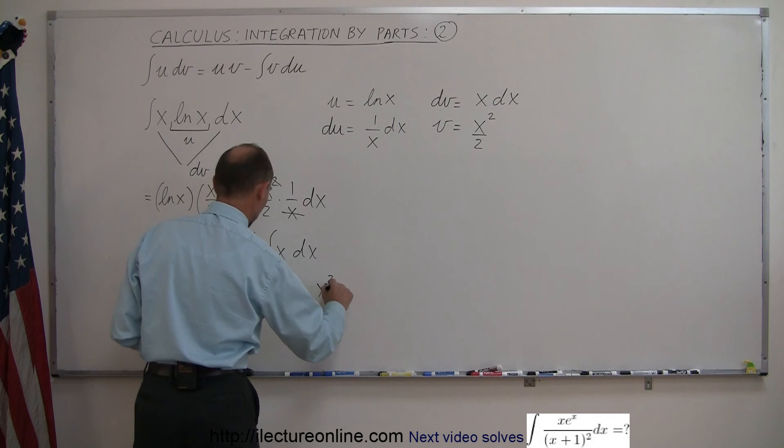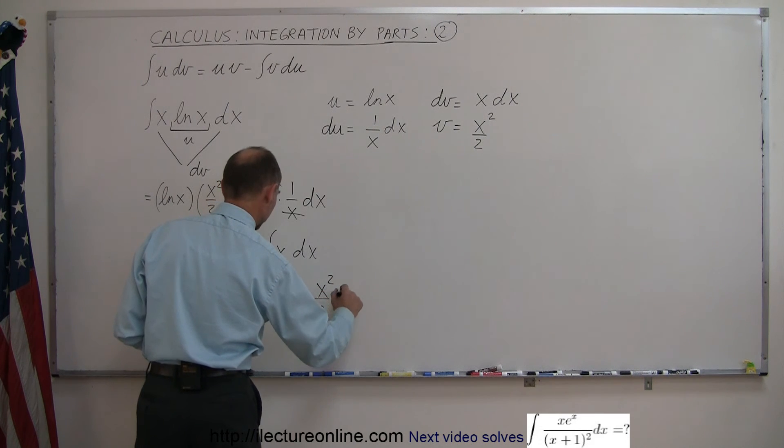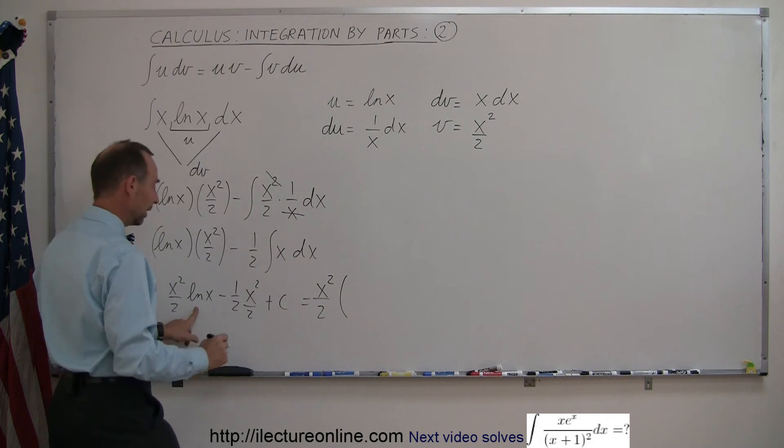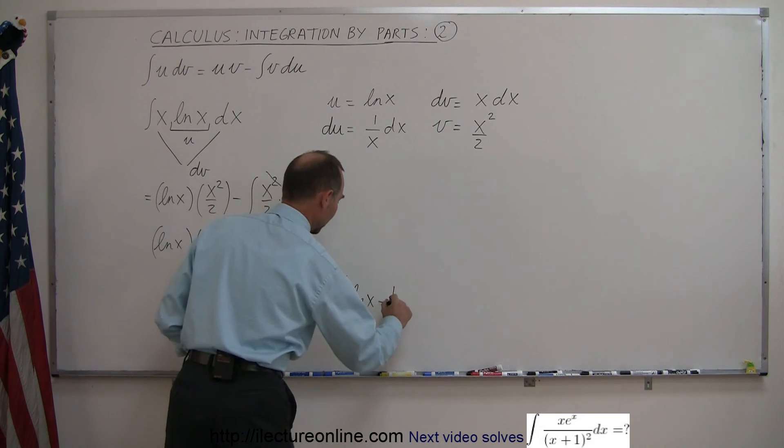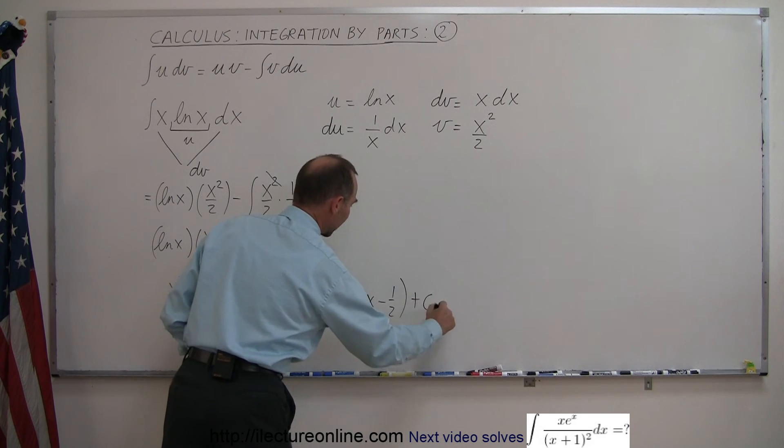this can be written as x squared over 2 times the natural log of x minus 1 half, plus a constant of integration.